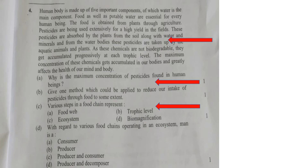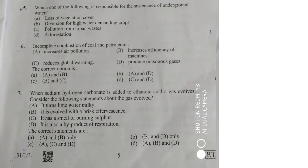In science, you are given a paragraph and you have to solve questions based on it. Those who have good understanding and clear concepts will be able to do these questions. Next, let's go to question 5. Section A will also have multiple choice questions. Question 5 asks: which one of the following is responsible for the sustenance of underground water?